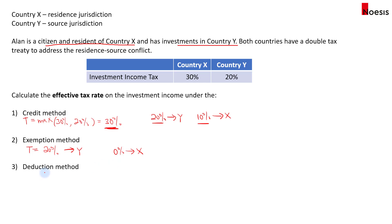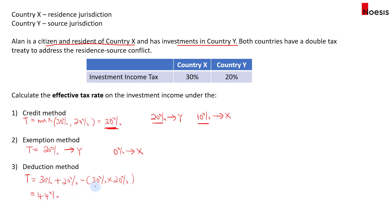Under the deduction method, the resident's country allows the taxpayer to reduce their taxable income by the amount of tax paid to the foreign government — country Y — in respect of the foreign source income. To calculate the effective tax rate, we add the two tax rates: 30% plus 20%, then minus the product of 30 and 20, giving us 44%.